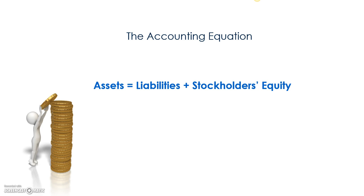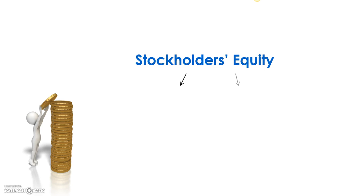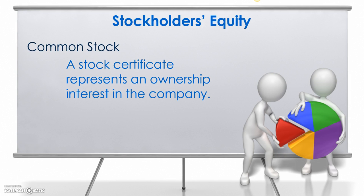This piece is actually comprised of two components: common stock and retained earnings. Common stock is basically represented by a stock certificate. It represents an ownership interest in the company. Companies will sell a stock certificate to a buyer who becomes a shareholder — they own a small piece of the company. Companies do this as a way to raise money, and this becomes what we call contributed capital. So the first component of stockholders' equity you need to understand is common stock.